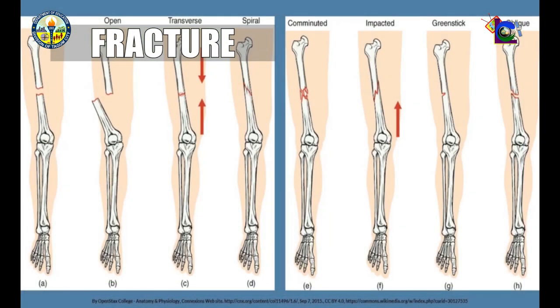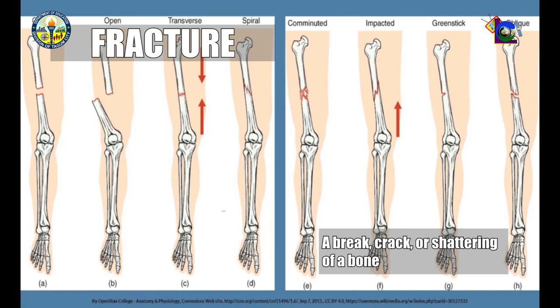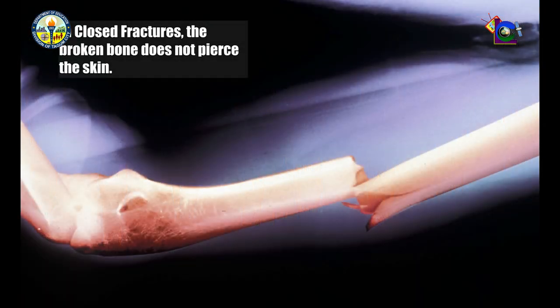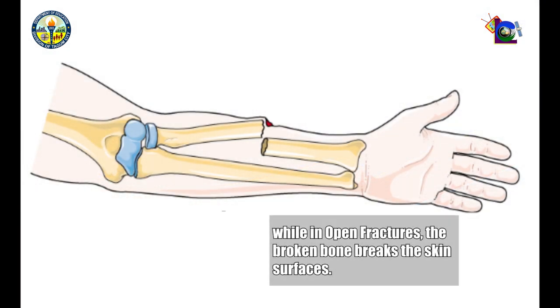Fifth is fracture — a break, crack, or shattering of a bone. In closed fractures, the broken bone does not pierce the skin. While in open fractures, the broken bone breaks the skin's surface.